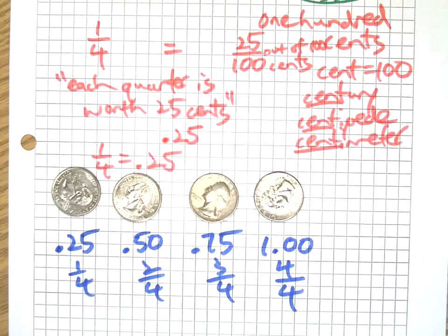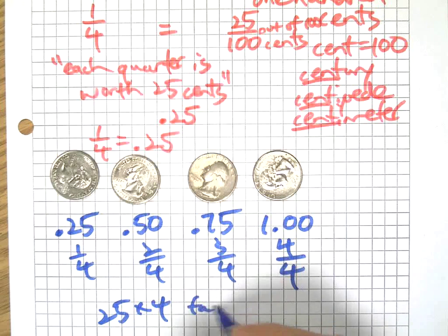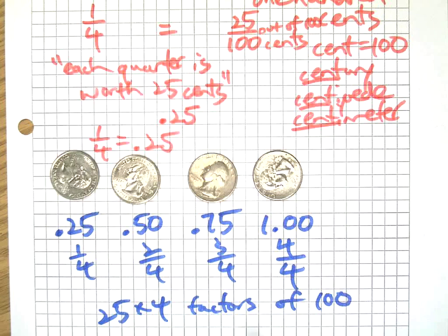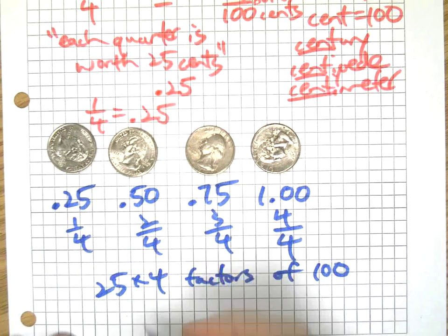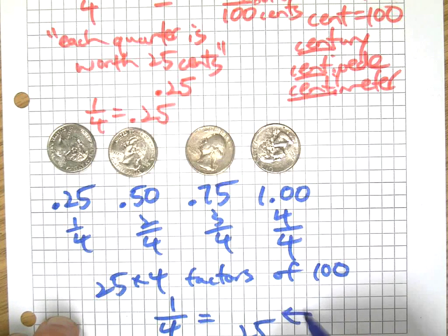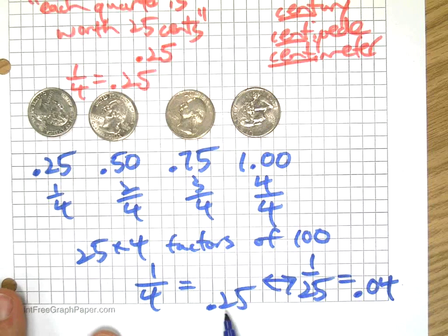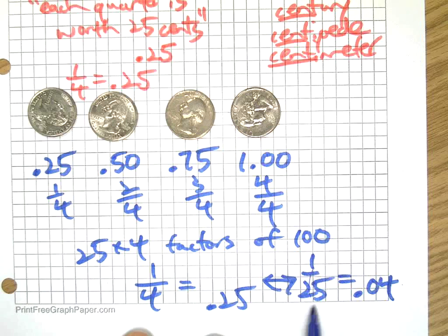You're probably thinking 'duh, I already knew that,' and I hope so. I'm going to use that to make a connection for you. What this means is that 25 and 4 are factors of 100. If you can find any two factors of 100, they're going to share this same relationship. Each one of these equals 25 hundredths, and it works the other way around too—each one 25th is worth 4 cents.